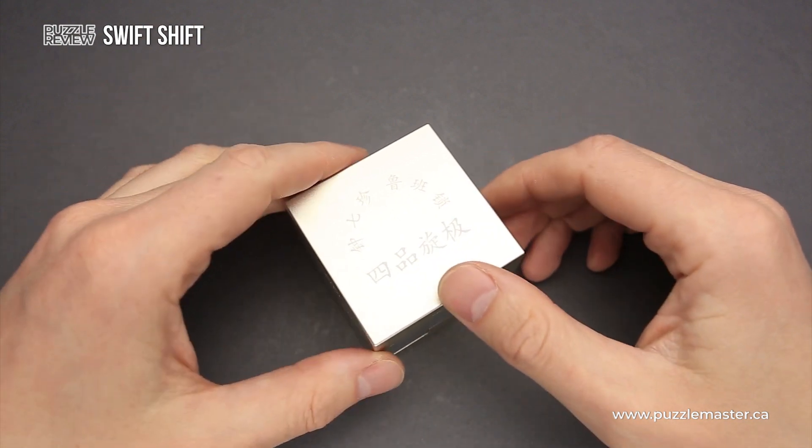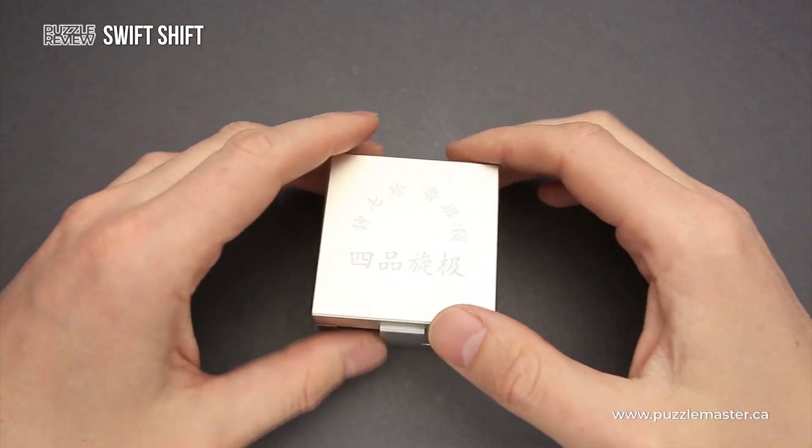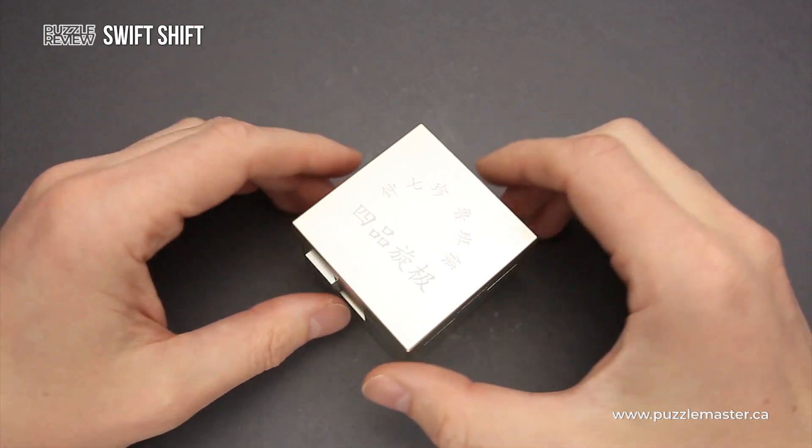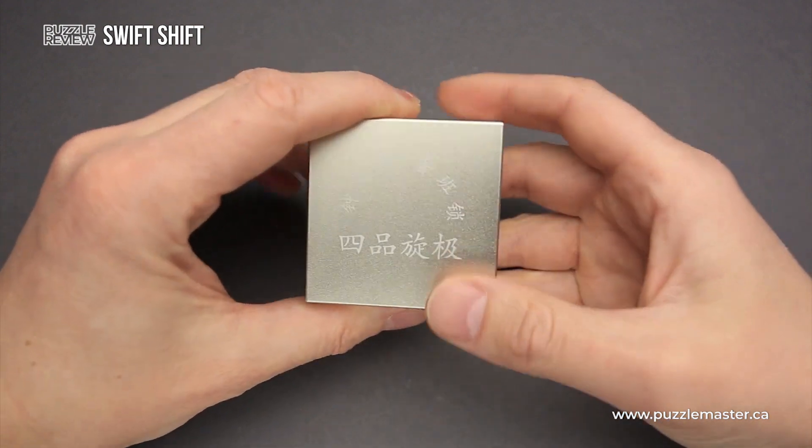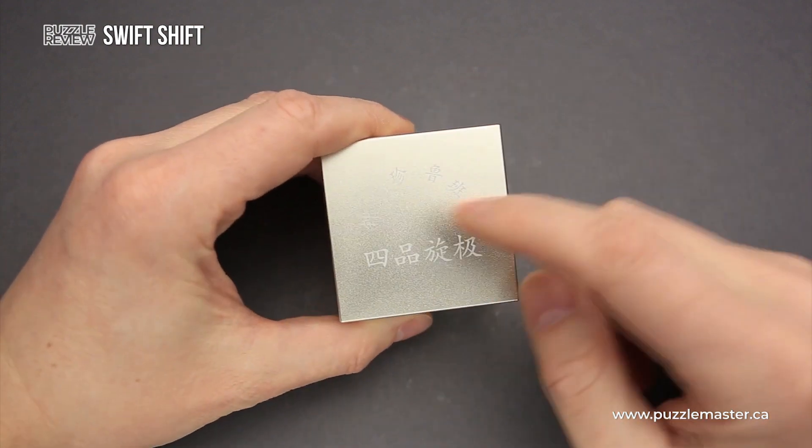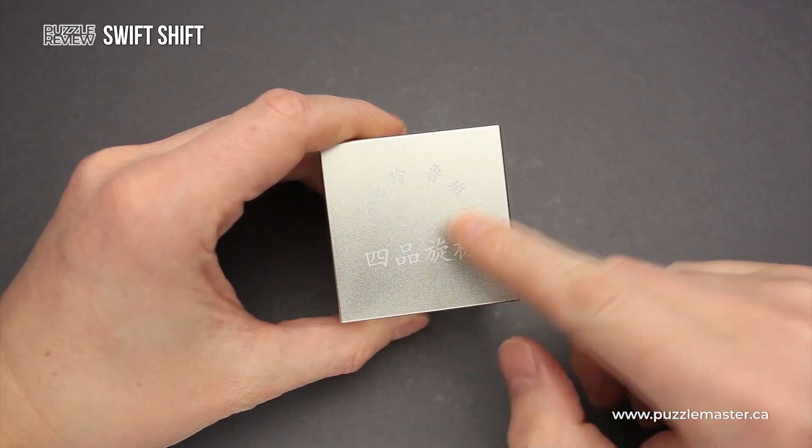This puzzle was made of aluminum alloy and milled by CNC. It is an extremely well-made puzzle and it feels very nice in hand. Also it has a Chinese engravement on top.